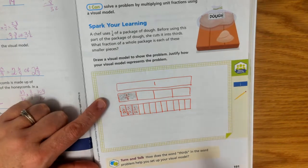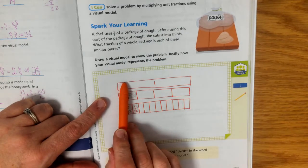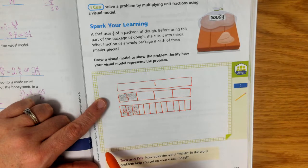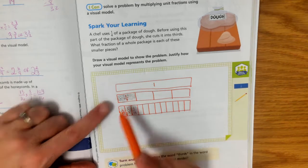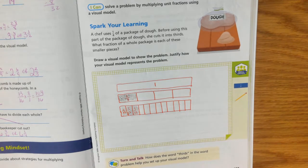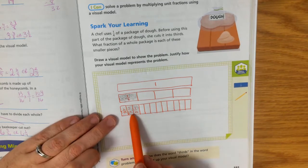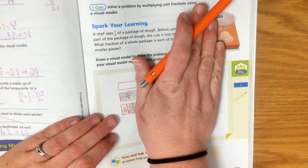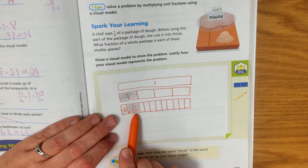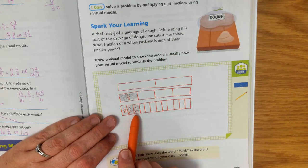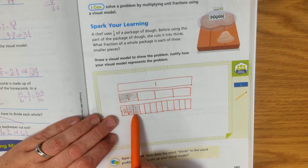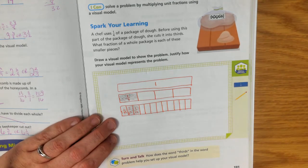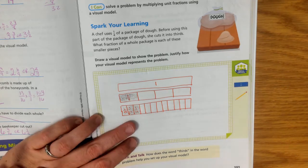So she started with a whole, cut her package into fourths because she used a fourth of the dough. Then out of that fourth of the dough, she cut it into thirds. She cut just the fourth into thirds. So the fraction of the whole package is each of the smaller pieces is one-twelfth of the whole package, or each of the smaller pieces.